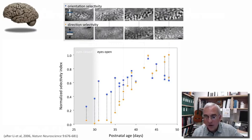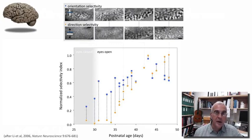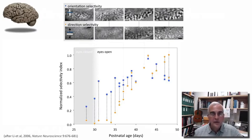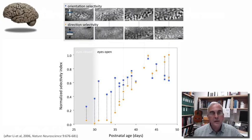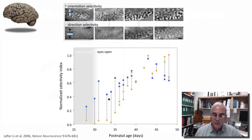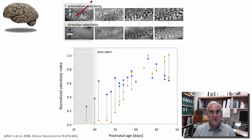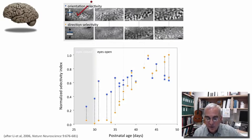What I'm showing you are representations of orientation selectivity and direction selectivity acquired from the very same animal within this cohort. We sampled these animals at different stages of development following the time of natural eye opening, which is right around the end of the first month of postnatal life. What we found is that when we looked at animals right around the time of natural eye opening, orientation preference was present, as indicated by this series of orientation columns interdigitating with one another.